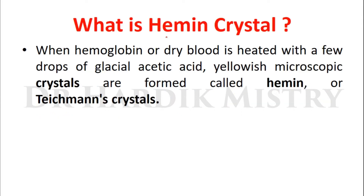What is hemin crystal? When hemoglobin or dry blood is heated with a few drops of glacial acetic acid, yellowish microscopic crystals are formed, which are called hemin or Teckman crystals.